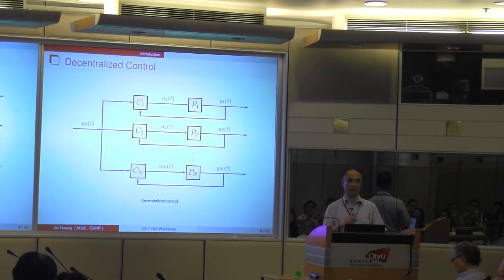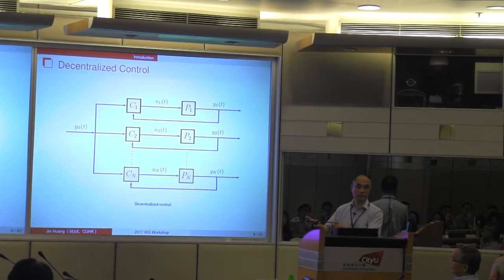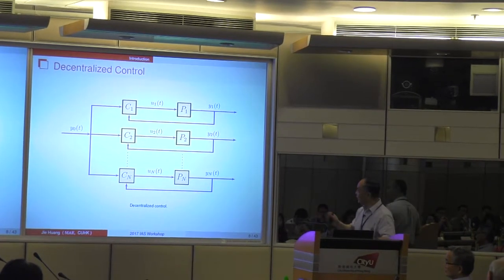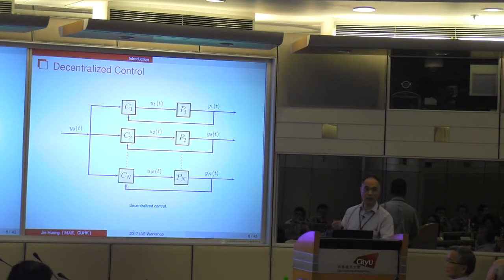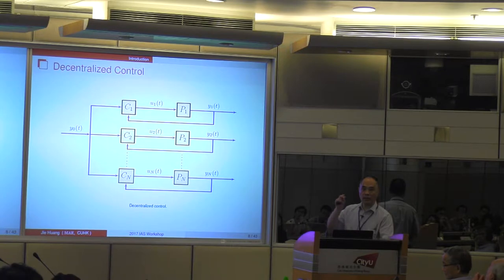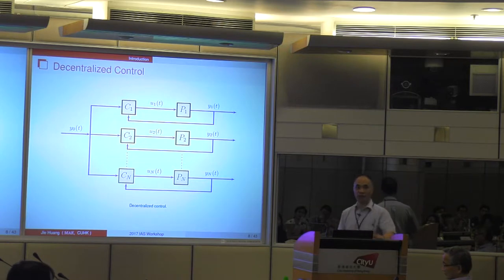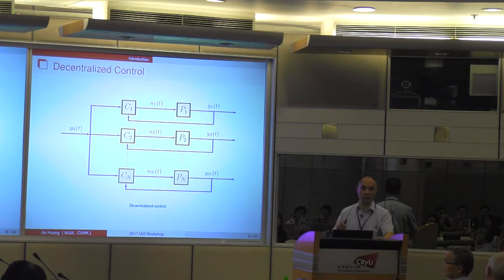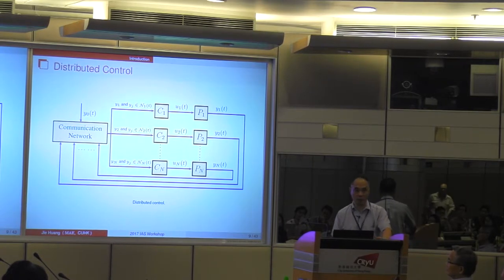The key feature of decentralized control is that there is no cooperation among all subsystems. However, in reality, a multi-agent system has many subsystems. Typically, due to communication constraints, not every follower can access the information of the exogenous input. Therefore, decentralized control in general does not work. In order to deal with the communication constraints, we further introduce the so-called distributed control.